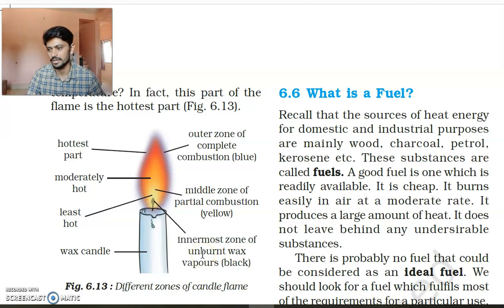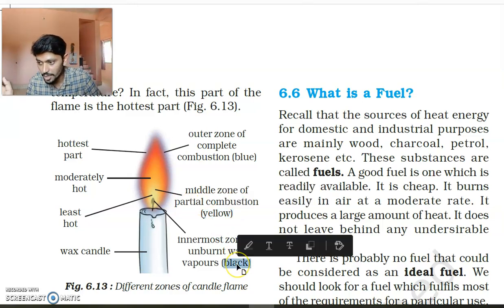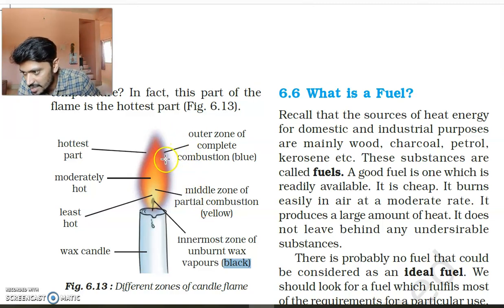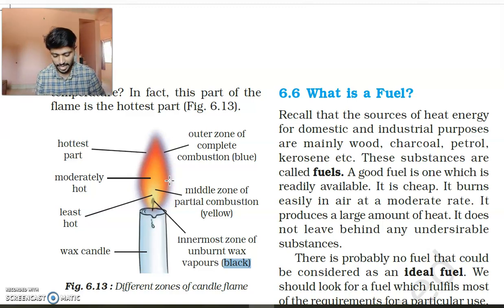To summarize the structure of flame: the innermost layer or zone contains unburnt wax and does not burn completely. As we move outward, we have an orange-yellow part of the flame where there is partial combustion. The outermost part, which in the textbook may appear dark or black, is actually blue in color in reality when you look at a candle or a lit match.